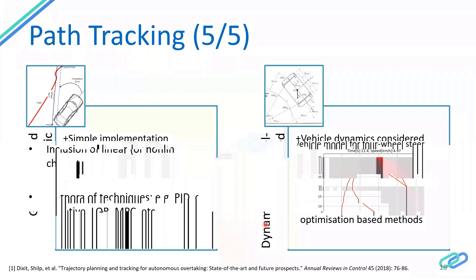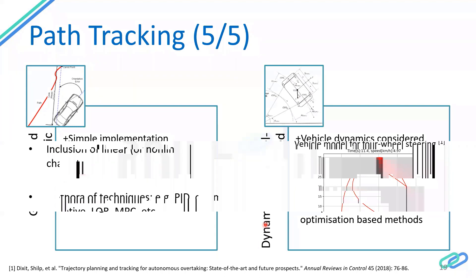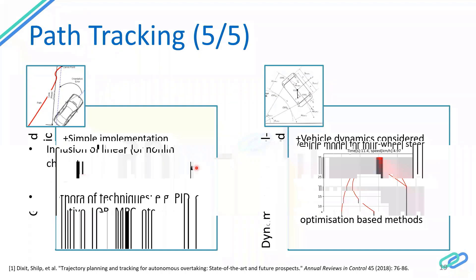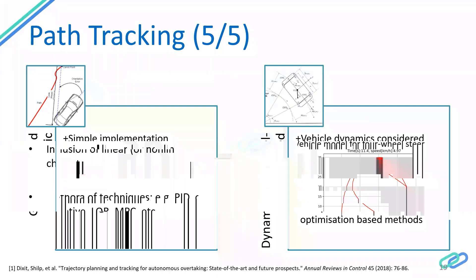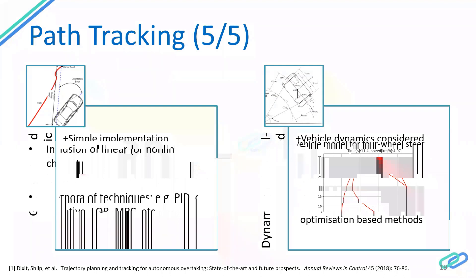To summarize path tracking controllers, there needs to be a trade-off and cost-benefit analysis of the different techniques. Geometric and kinematic controllers are relatively easy to implement and many have been experimentally validated across a host of driving conditions — something as elegant as the Stanley controller has been used often and shown to work quite well. However, vehicle dynamics are not considered, and tracking performance reduces significantly when vehicle velocity changes.